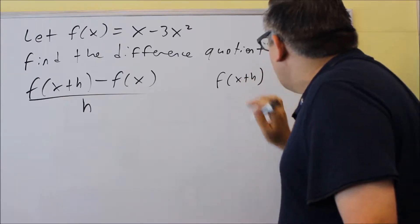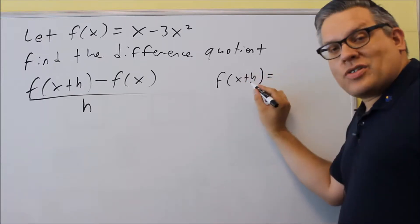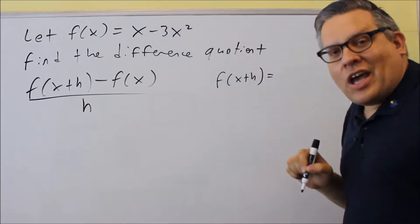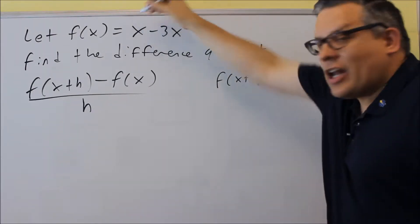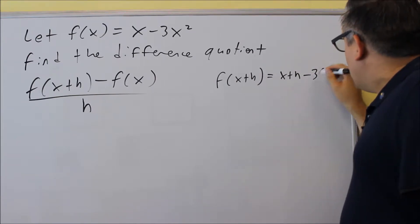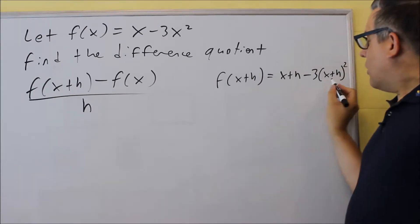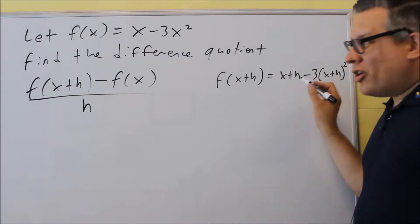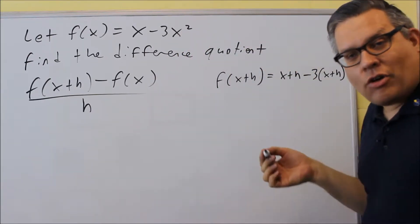So if I do f(x+h), what that means is I have to take x+h and I need to put it in place of each of the x's. So it's going to look like this: I have x+h in for that x, I have a minus 3, and then I have x+h in the second one, and I get (x+h)². So notice what I'm doing. I'm putting x+h in for each of the x's. I'm not just adding an h on the end like that. That's incorrect.